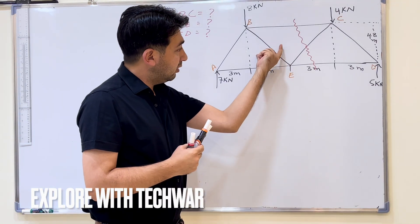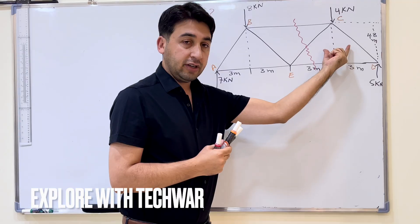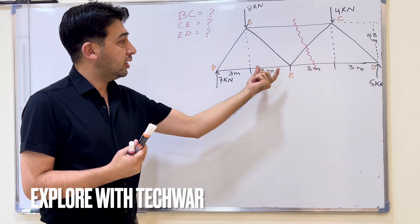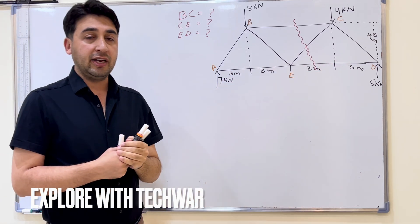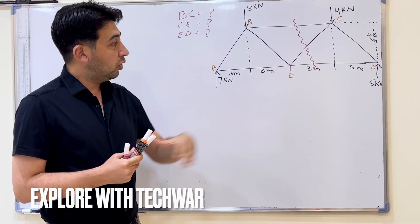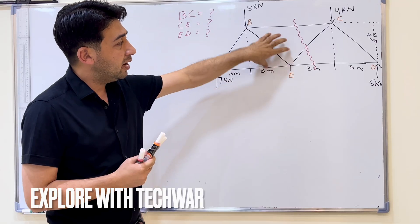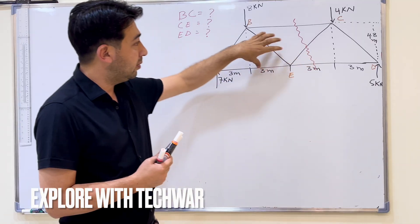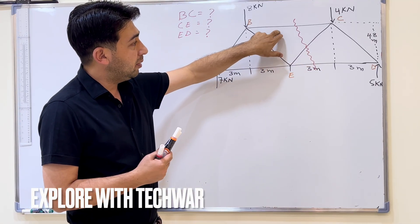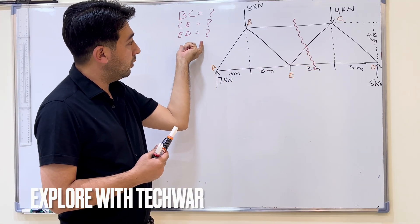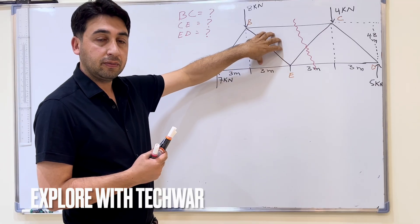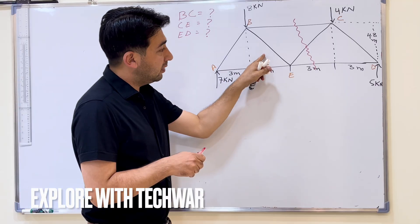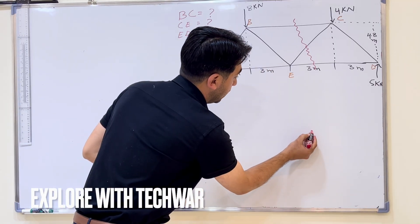Now we have two sections of the truss — on the left side and on the right side. It is up to us which section we take and redraw as a free body diagram. Here we are taking this left section only and forgetting the right side of the truss. We will be able to find the internal forces in the members we want from this half section. I will redraw this section of the truss.